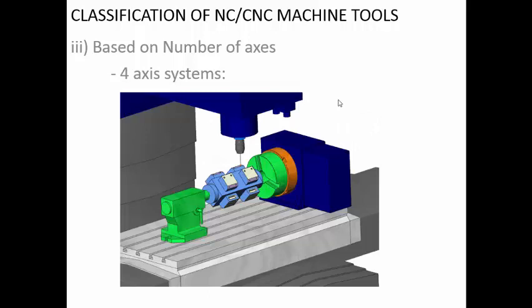A four-axis system is an extension of the milling machine where the table on which the workpiece is mounted can be given an additional rotation. The tool in the spindle has up-and-down movement, the table moves in X and Y directions, and a special motor provides rotation of the workpiece about an additional axis. This makes it possible to drill holes at an angle to the surface, which is not possible on a three-axis machine without specialized fixtures.